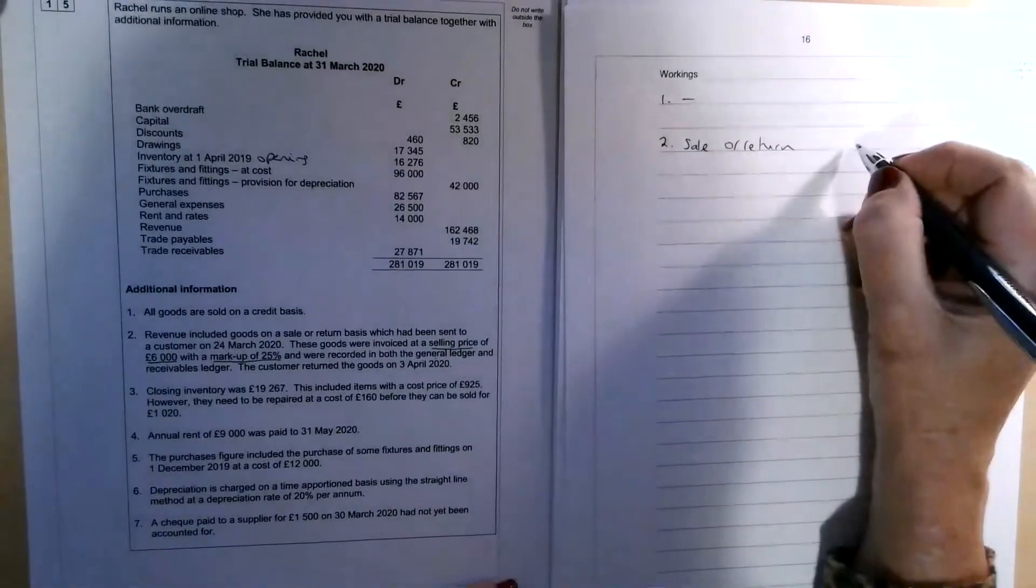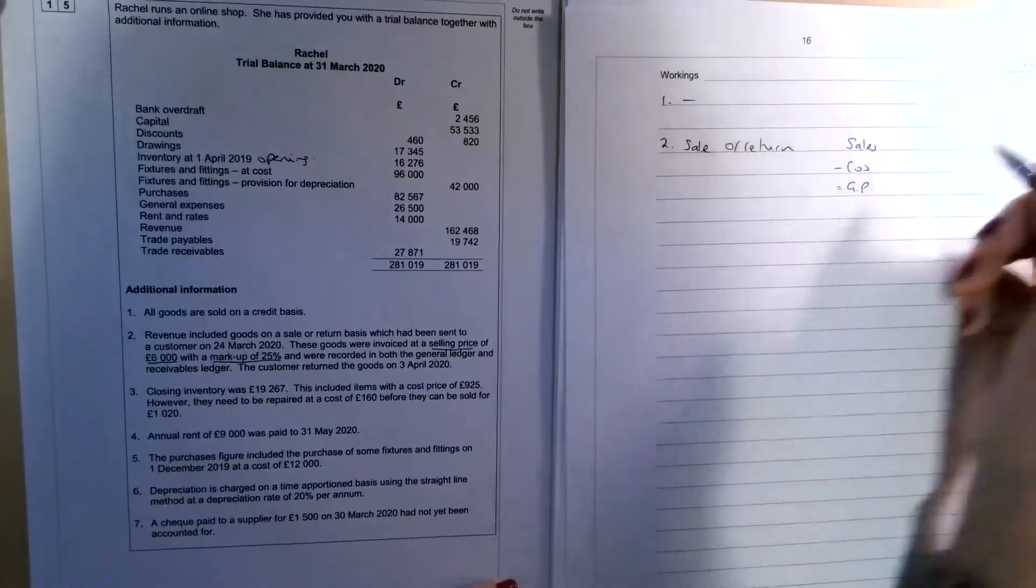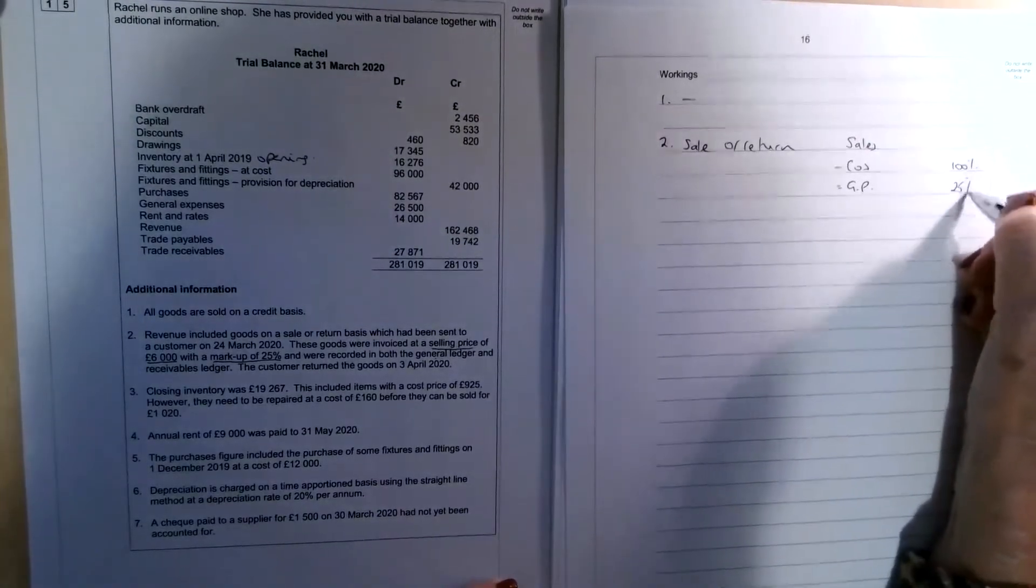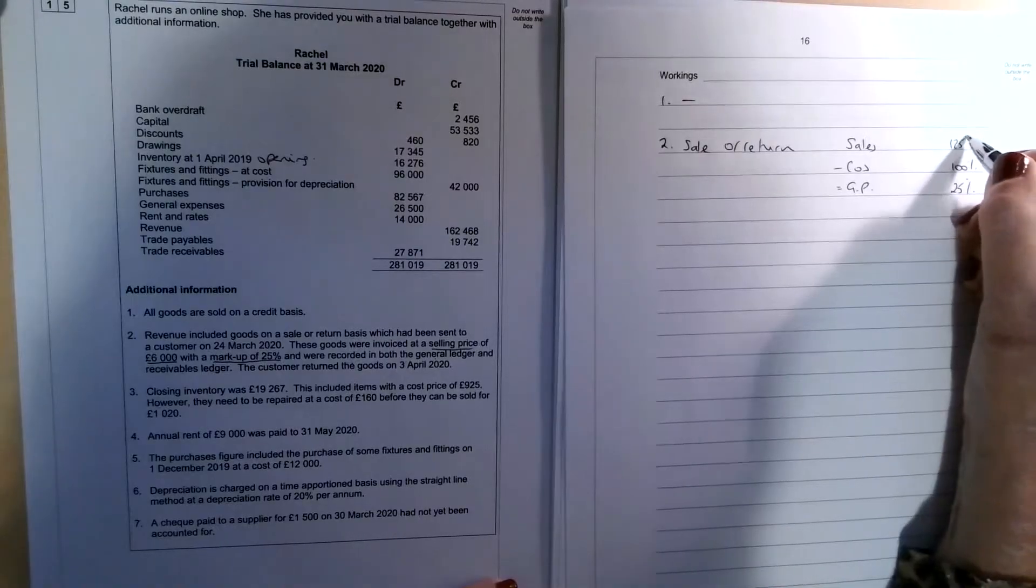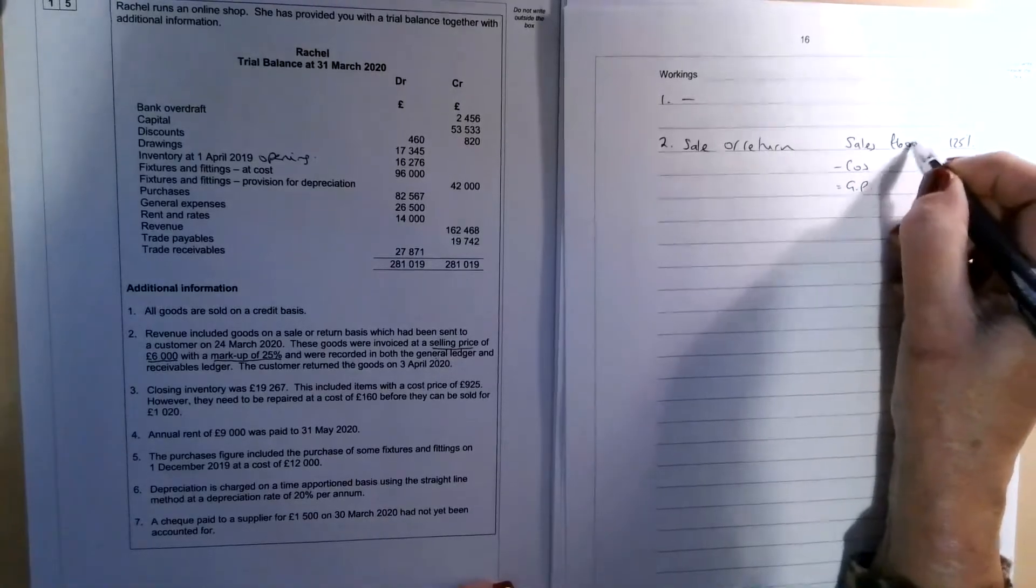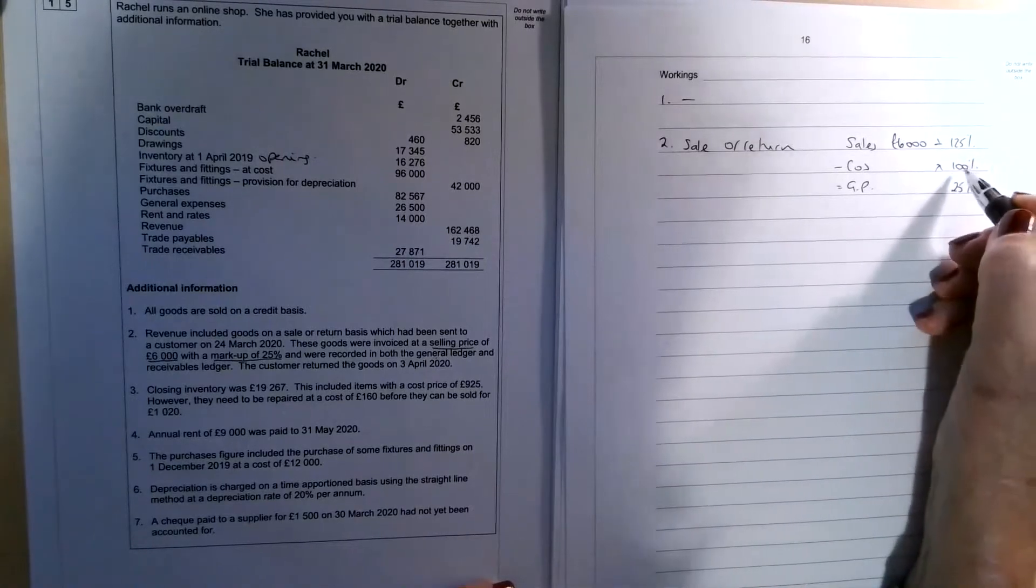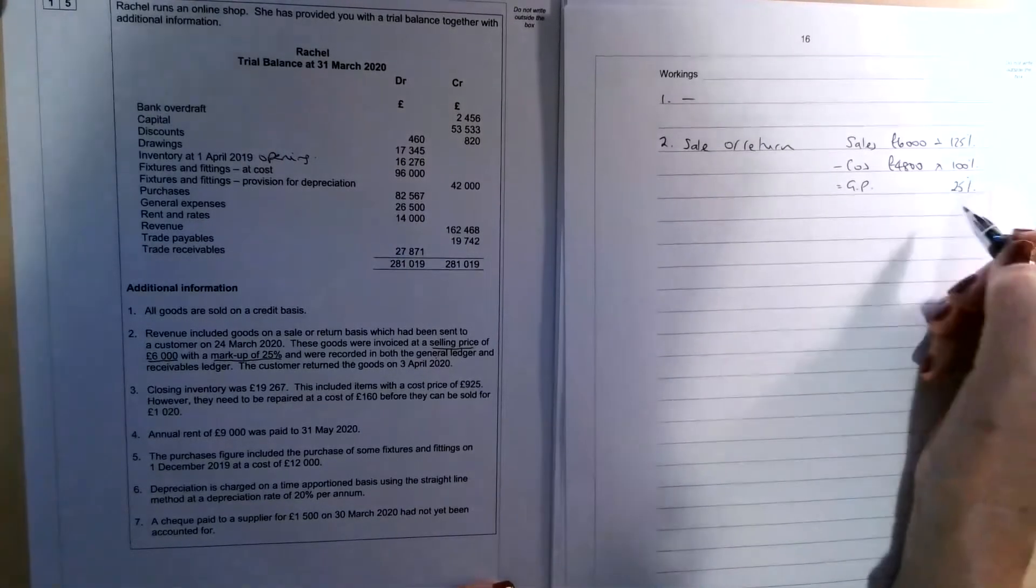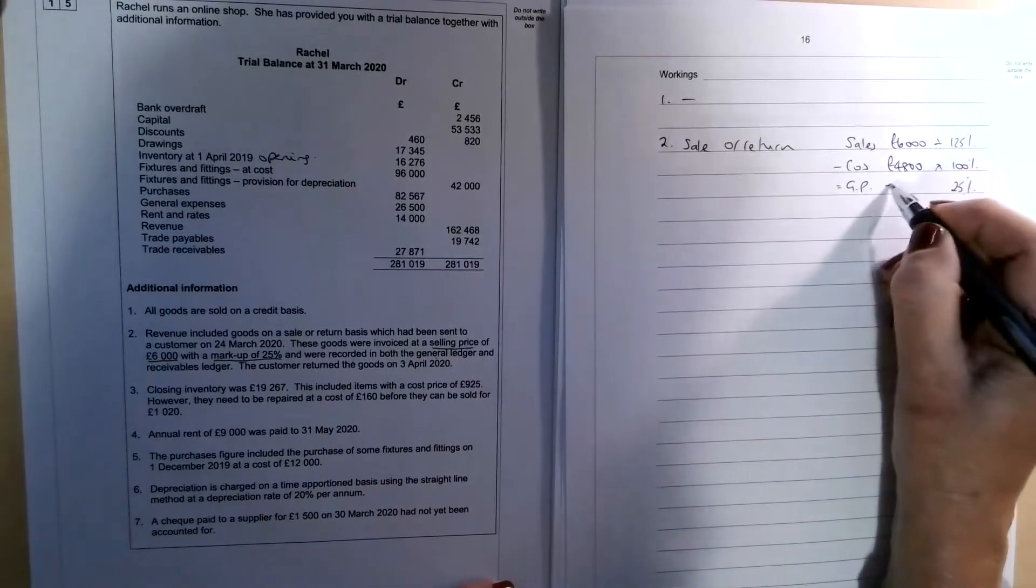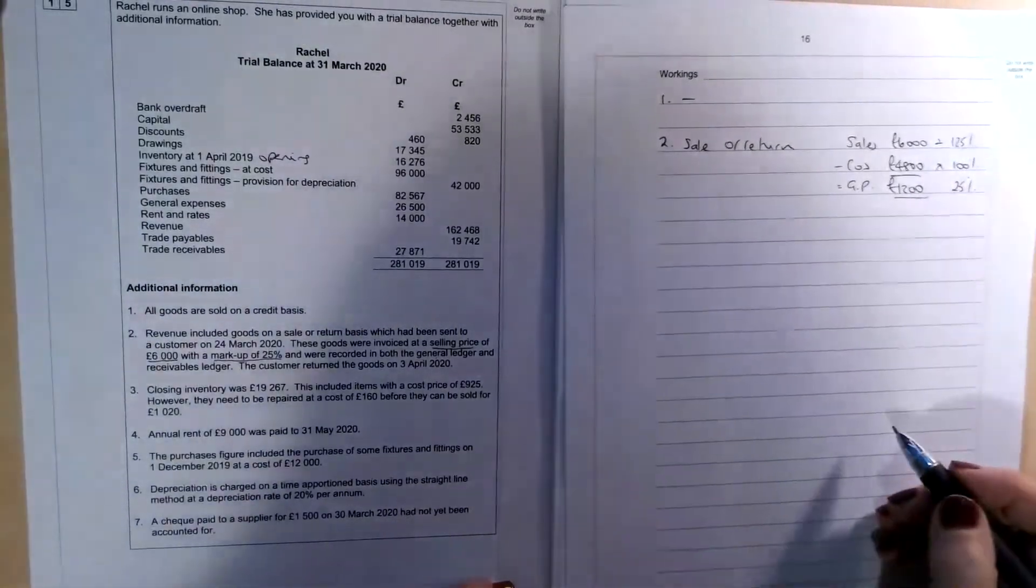Now, if we remember the calculation, when we're dealing with markup, we've got sales minus cost of sales is gross profit. Now sales, when we're working with markup, the cost of sales is 100%. In this case, we're adding a 25% markup. And that means that the selling price represents 125%. So if we stick the figure in that we know, we know that sales were £6,000. So the way to solve this one is to divide it by 125 and times it by 100 to bring you back to the cost price. You can do the same to find the gross profit, so the 6,000 divided by the 125 times it by 25 to get you 1200, which is the gross profit. You can just check that the maths works there.